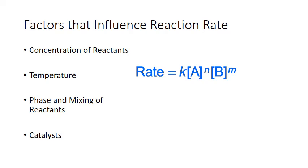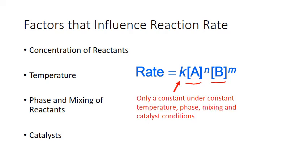Now all of these influences are incorporated mathematically into the rate law. Reactant concentration is directly related as one of the terms in the rate law itself. The remaining three influences are all incorporated into the rate constant k. So k is only considered a constant under constant conditions of temperature and things like phase, mixing, and catalysts. If you change these conditions, you change the value of the constant.